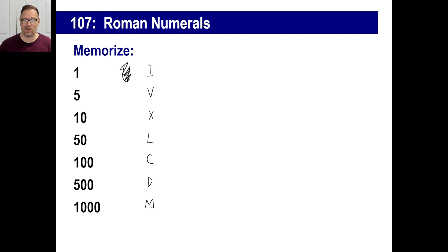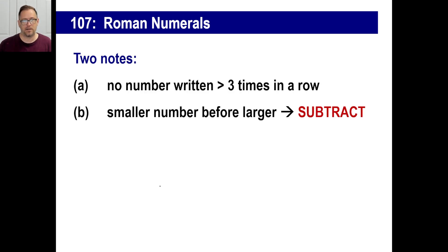If you want to know, to make your life richer, you can look at the C, for example. That's where we get the word century, and then M is millennia, where we get the word thousand. A couple of notes on Roman numerals: no number do you write more than three times in a row. And the second note, when the smaller number is in front of the larger number, that means to subtract.